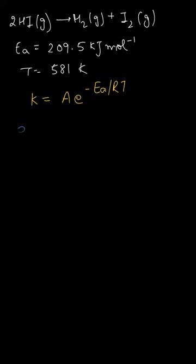We can write this term as x, so x equals e to the minus Ea upon RT. Since we have the exponent, we take the natural log of both sides, giving us ln x equals minus Ea upon RT.